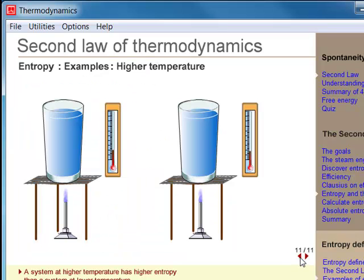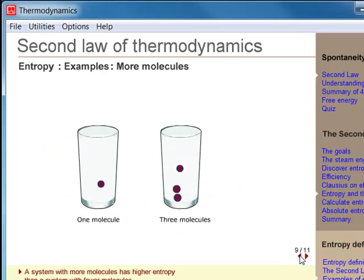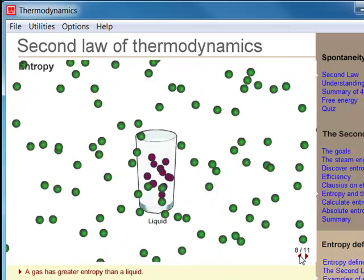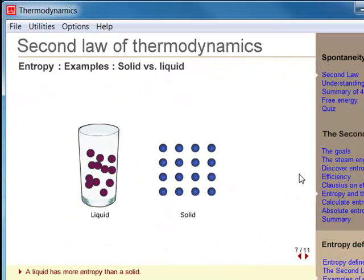A system at higher temperature has greater entropy than the same system at lower temperature. Molecules with more complicated structures have greater entropy. A system with more atoms or molecules has greater entropy. A gas has greater entropy than a liquid. A liquid has greater entropy than a solid.